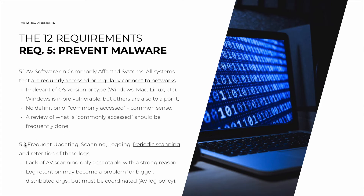Sub-requirement 5.2 is about frequent updating, scanning, and logging — in other words, forcing you to actually put the antivirus to use. Periodic scanning of the machines and retention of these logs is required. The lack of antivirus scanning is only acceptable with a strong reason. For example, maybe you have a server so overloaded that it can't run antivirus without impacting everything else, and to compensate you run antivirus software on all machines that connect to it. These kinds of exceptions are acceptable as long as you have a reason. Use common sense.